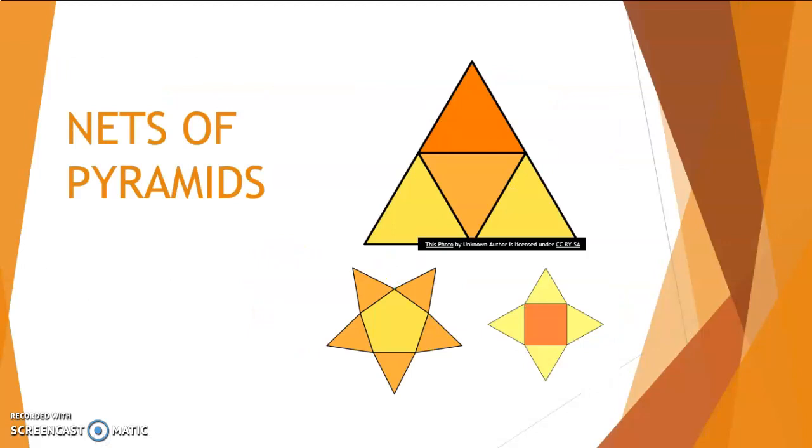Now if we move on to the nets of pyramids. This special one is called a tetrahedron. It is a triangular pyramid and all its faces are triangles. This one folds up and this one and this one and it forms a pyramid.